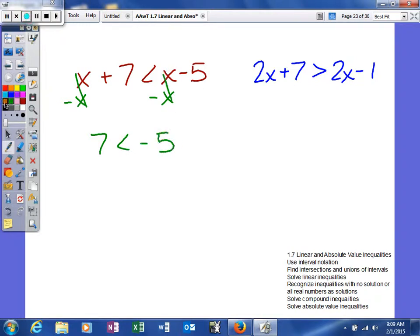Over on the other one, when I try to get my variables on the same side, I'll get 7 is greater than negative 1.